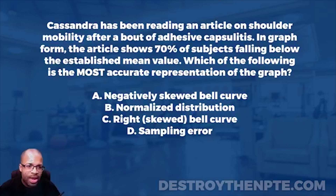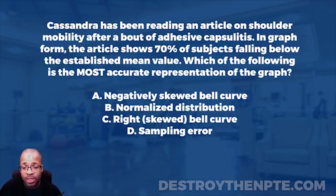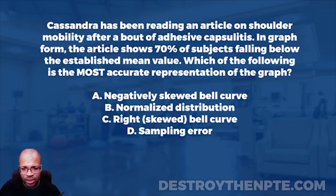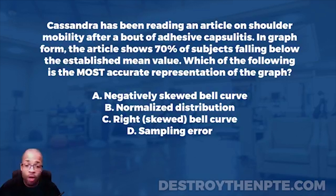For this week's Challenge Wednesday we have Cassandra, who has been reading an article on shoulder mobility after a bout of adhesive capsulitis. In graph form, the article shows 70% of subjects falling below the established mean. Which of the following is the most accurate representation of the graph? A) negatively skewed bell curve, B) normalized distribution, C) right skewed bell curve, D) sampling error.